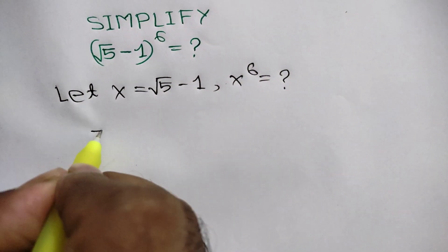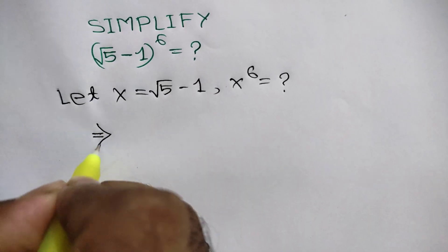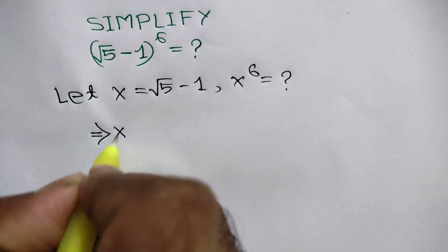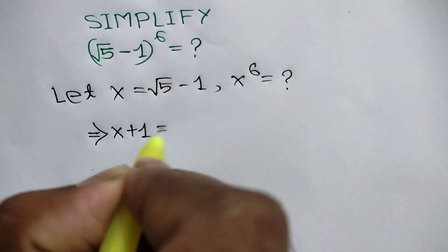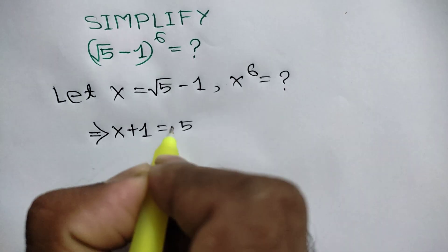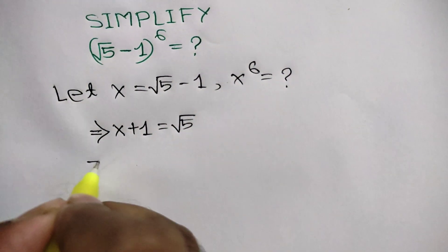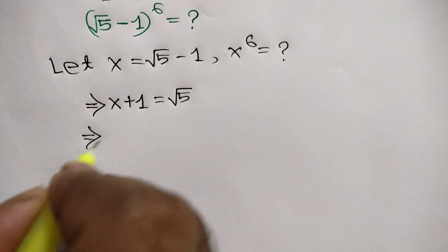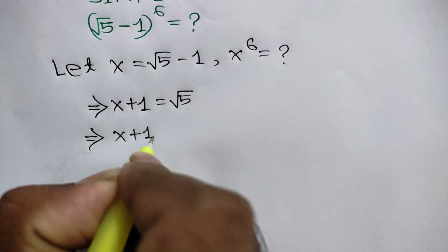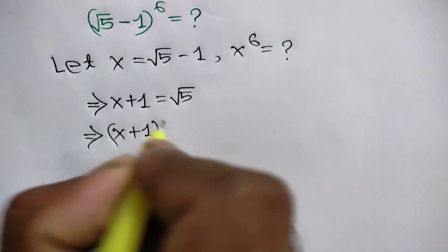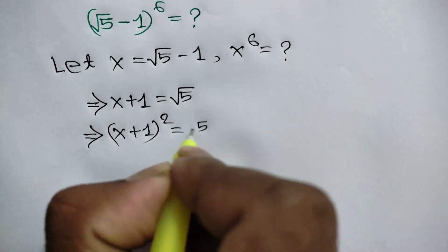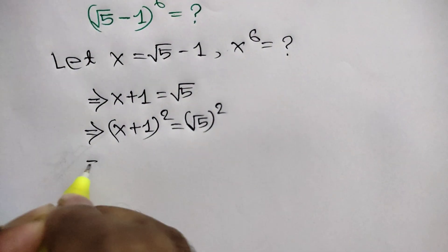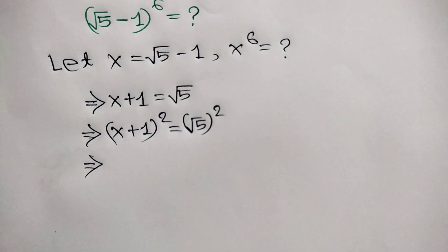Taking negative 1 to the left side, we will get x plus 1 is equal to the square root of 5. Now squaring both sides, we can write x plus 1 whole square is equal to square root of 5 whole square.